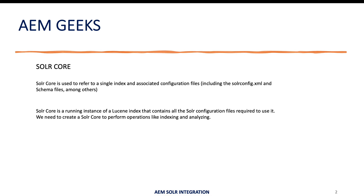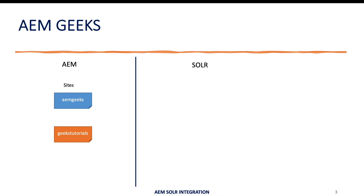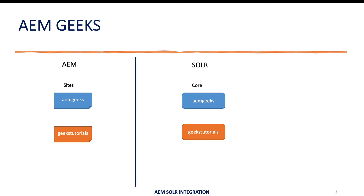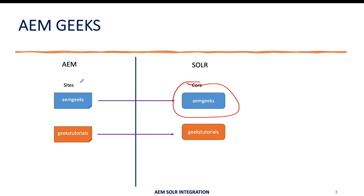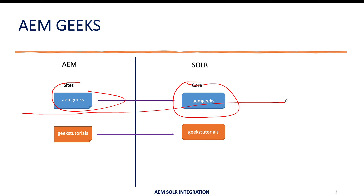Let's say I have an AEM instance with two websites: AEMGeeks and GeeksTutorial. I want each website to be indexed in Solr in entirely different sections — I do not want communication between these two. So what I'll do: I'll create two cores and index data for a particular website in one core. Each core will contain everything for that website — configuration files, schema, data, and indexes. That's why I create two separate cores, each containing everything to handle search, indexes, and all the data.